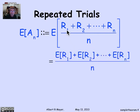And by additivity of expectation, that's the sum of the expectation of each of the r's over n. But each of them has expectation mu. So the numerator is n mu, and the n's cancel.